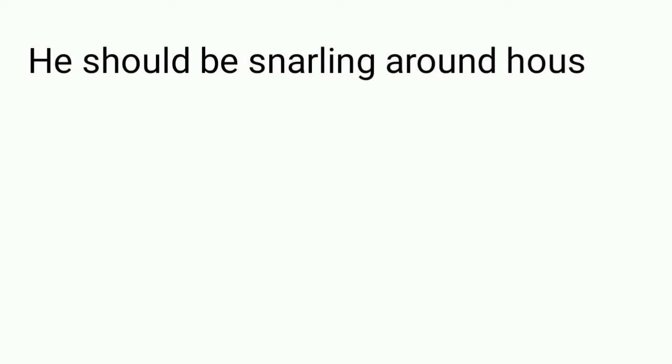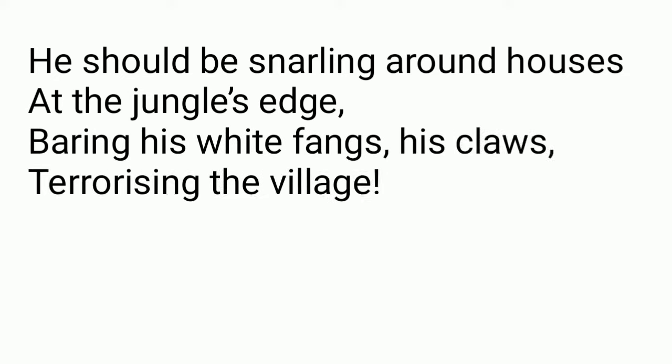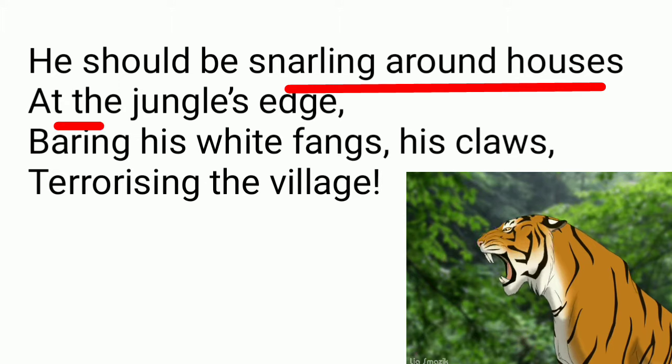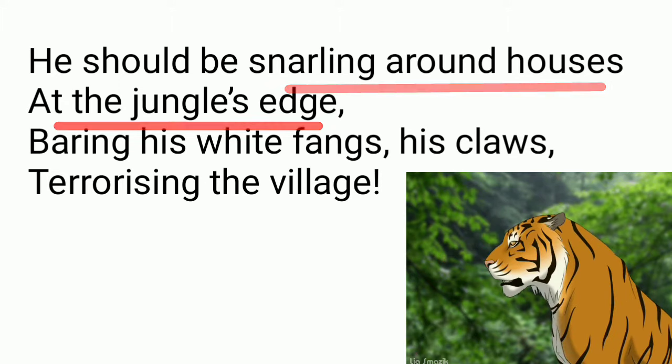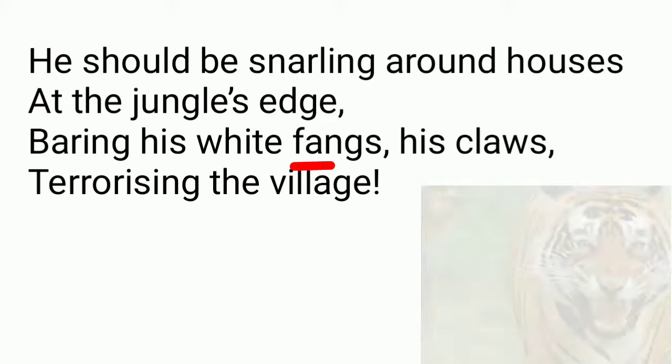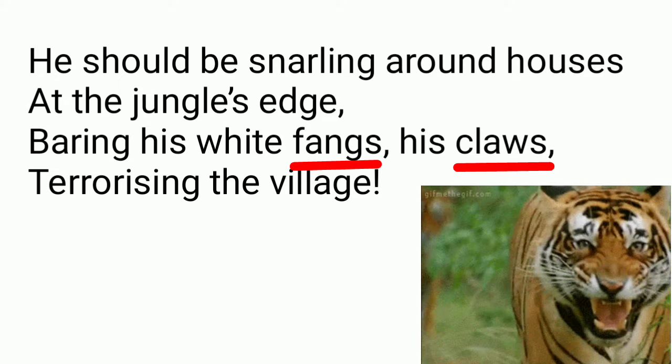The third stanza goes like this: 'He should be snarling around houses at the jungle's edge, baring his white fangs, his claws terrorizing the village.' The poet says that if the tiger were free, he would have snarled around the houses located at the outskirts of the forest. He would terrorize the people with his sharp teeth and claws, creating fear among the people living in the village.